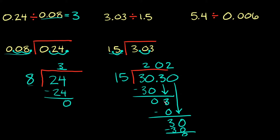Don't forget — it's very important — putting your decimal in your answer. Our answer up here is 202. Where does the decimal go? You go to the number underneath the answer, the decimal is right there, and you move it straight up. So our answer is 2.02. The original problem, 3.03 divided by 1.5, equals 2.02.